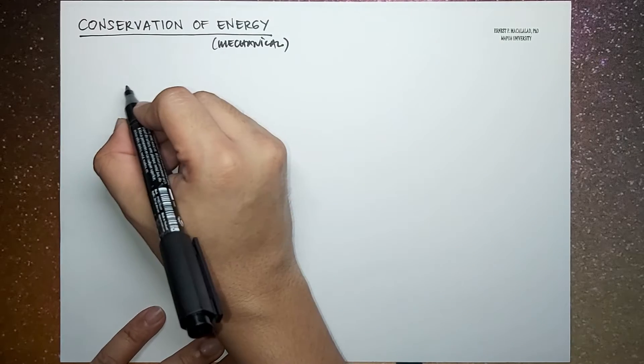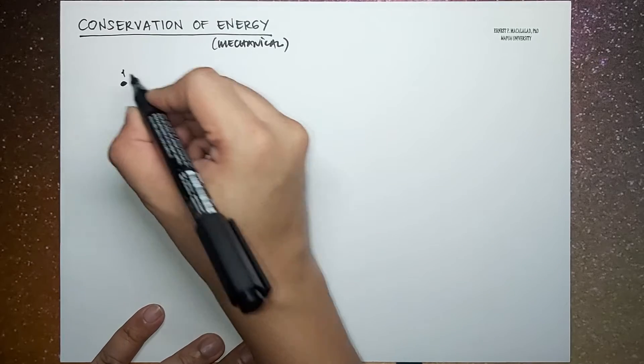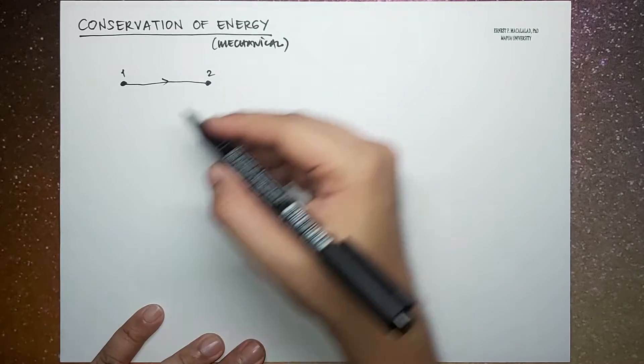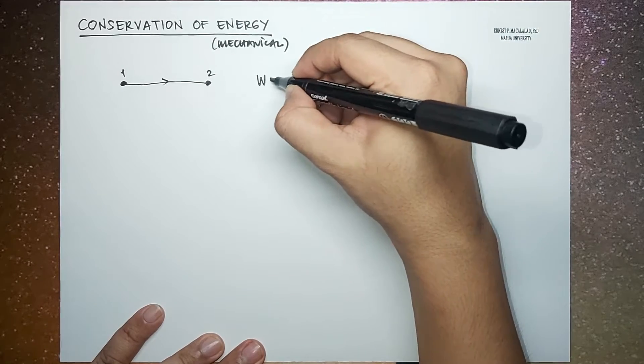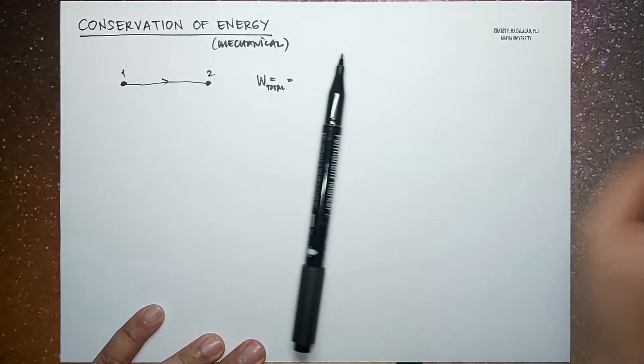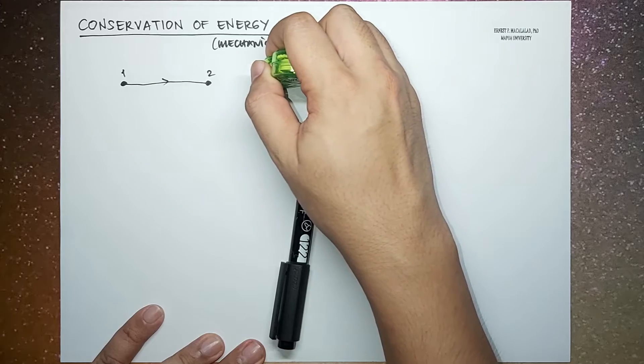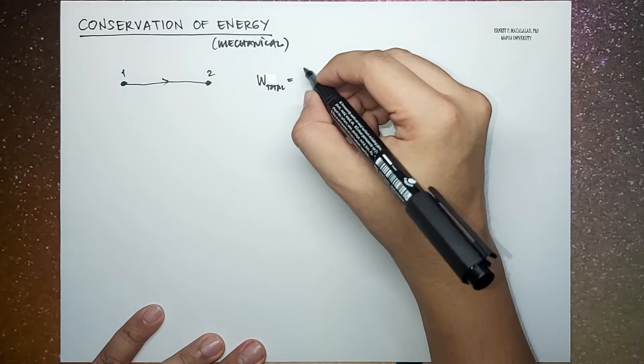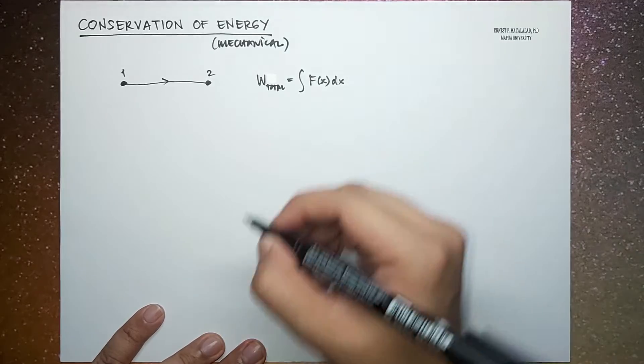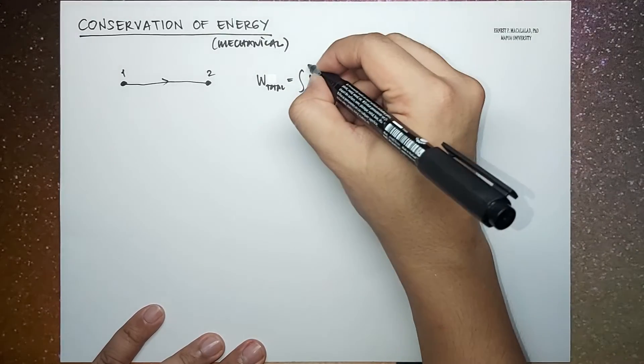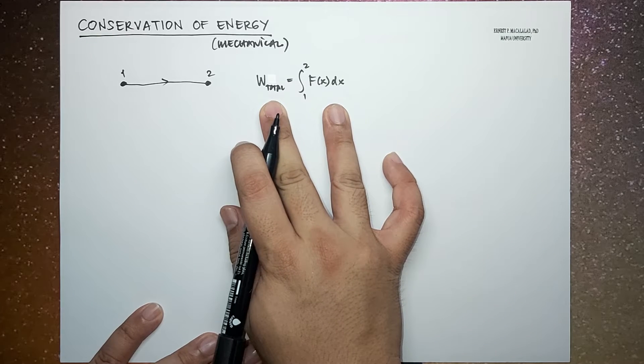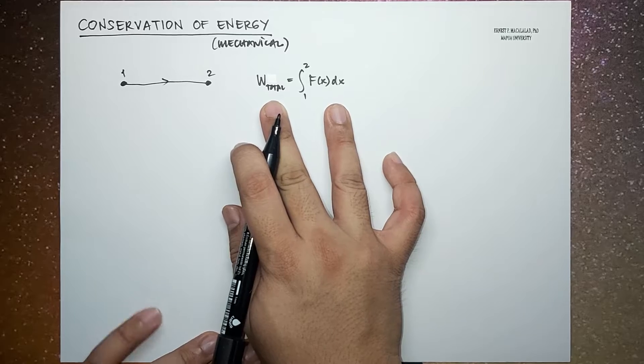So let's recall that, for example, a particle moved from one point to another. Okay, the total work done. This is just the integral of the force with respect to x, from position 1 to position 2. So you will remember that this is in one dimension.